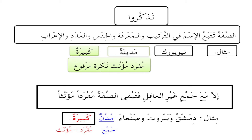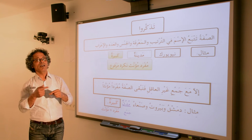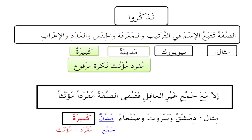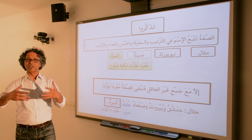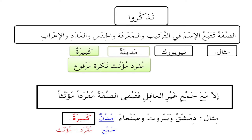Remember, we mentioned quite a few aspects about how a صفة works with an اسم. The adjective follows the noun in order — meaning it comes after the noun — in المعرفة (definiteness or indefiniteness), الجنس (gender), العدد (number), and الإعراب (case ending), meaning what does it do in the sentence? Is it a subject? Is it an object? What is it describing? And there is agreement in voweling in that sentence.